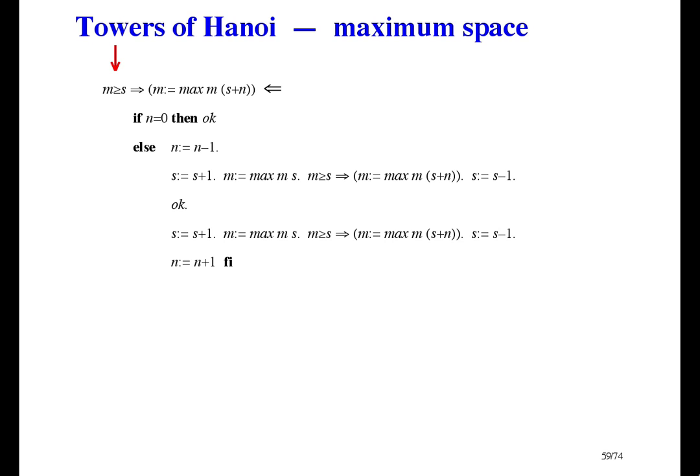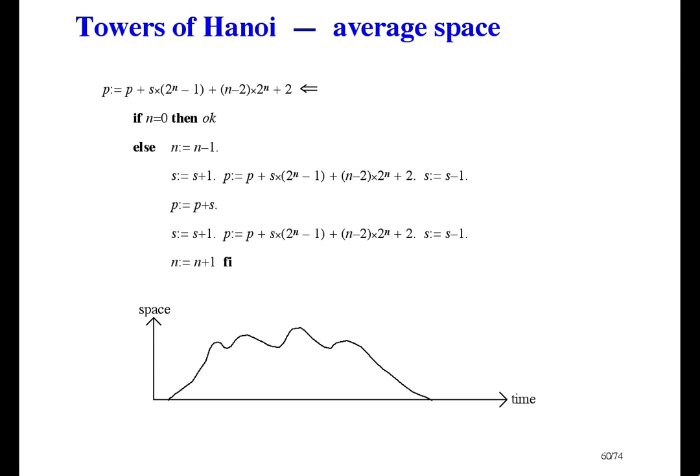I want to finish this lecture by talking about the average space occupied by a computation. This graph is supposed to be showing space usage going up and down over a period of time. To find the average space used, you take the spacetime product, which is the area under the curve, and divide by the time. At the start time, t, the space usage is s. And at the finish time, t prime, the space usage, s prime is equal to s.